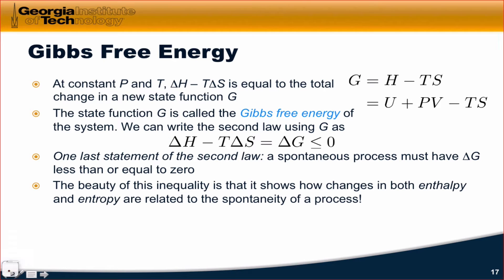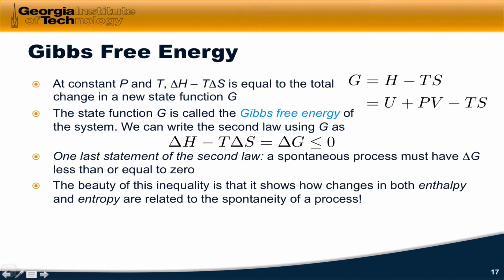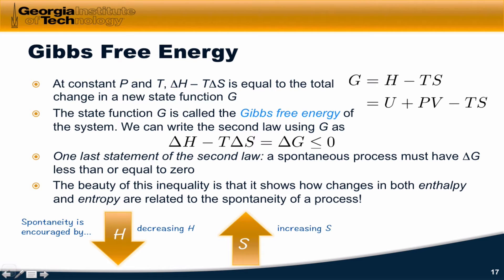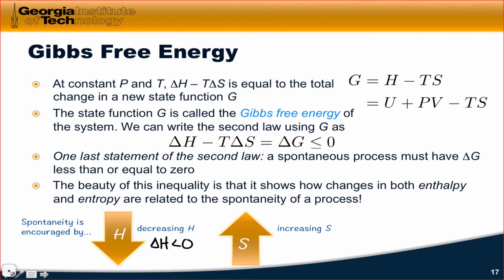Delta S less than zero is unfavorable, since we're subtracting delta S within the expression for delta G. So delta S positive is good, delta S negative is bad, delta H negative is good, and delta H positive is bad for spontaneity. Ultimately, spontaneity for a chemical process is encouraged by two things: decreasing enthalpy, delta H less than zero, and increasing entropy, delta S greater than zero.